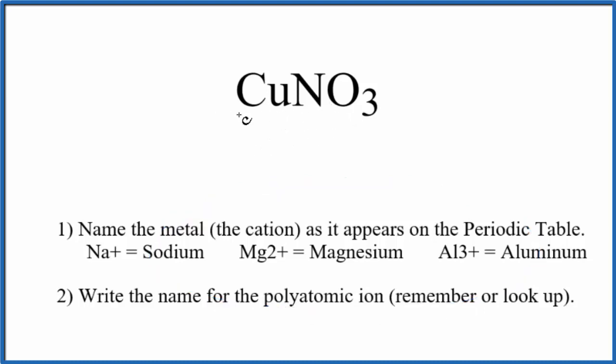First, we write the name for the metal. Cu is copper. And then this nitrate, NO3, the polyatomic ion, is just nitrate, lowercase n. And so far, we have copper nitrate is the name for CuNO3.